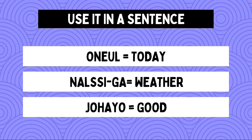The first part of the sentence is ONEUL, which means today. The second part is Nalssi ga — Nalssi is our word for today meaning weather, and ga is added to make it the topic of the sentence. The last word is JOAHYO, which means good. Combined, the sentence means: "Today, the weather is good." Note that JOAHYO is used here simply as stating a plain fact — that the weather today is good — with no expression of surprise.